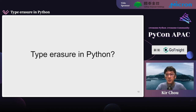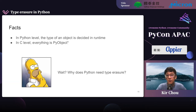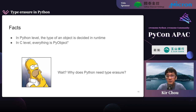Before talking about type erasure in Python — I added a question mark at the end. That's because after you learn C++ type erasure, you may ask: why does Python need type erasure? There are two facts. First, at the Python level, the type of an object is decided at runtime. And at the C level, everything is a PyObject pointer under the Python interpreter.